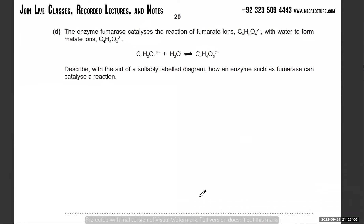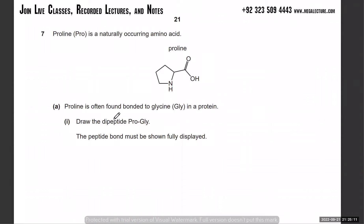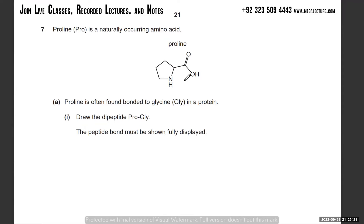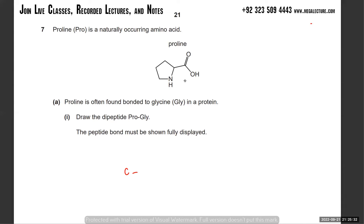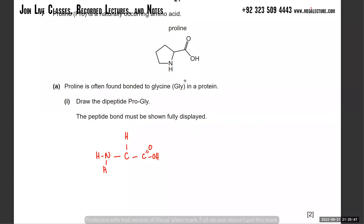Draw the peptide bond - proline is often found bonded to glycine in a protein. Glycine is an amino acid, and an amino acid has a carboxylic acid and an amino group. So that's what glycine is - it's got a CH2 group with NH2 and COOH.